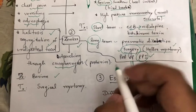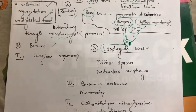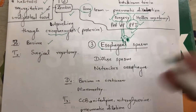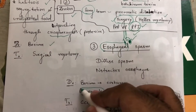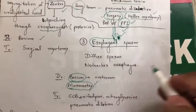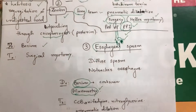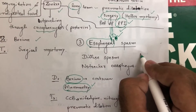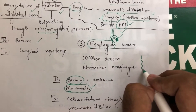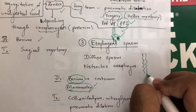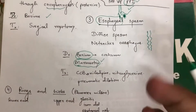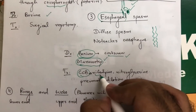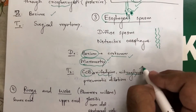The next condition is esophageal spasm. There are two types: diffuse esophageal spasm and nutcracker esophagus. You cannot differentiate between them clinically — you need high-pressure manometry. On barium swallow, esophageal spasm shows a corkscrew appearance, which represents abnormal non-peristaltic contractions alternating with relaxation. The corkscrew appearance is specific for esophageal spasm, while the beak sign is specific for achalasia.